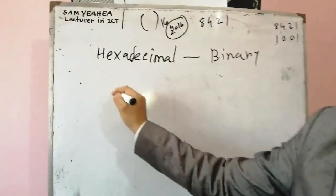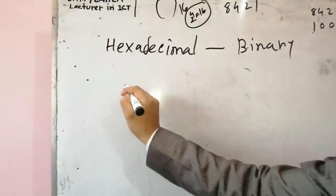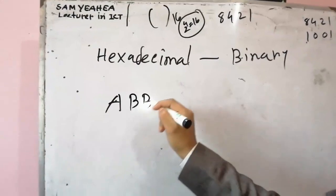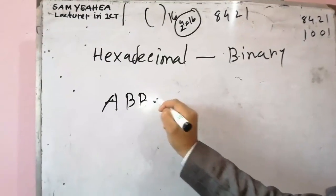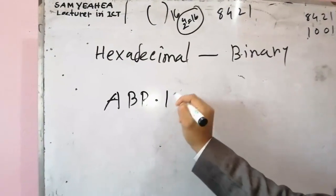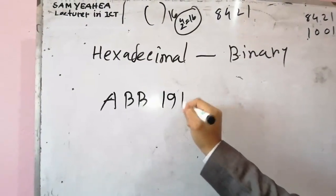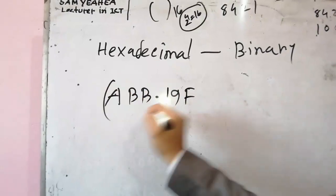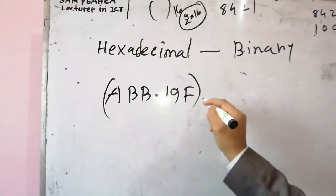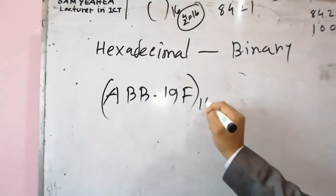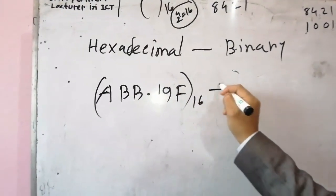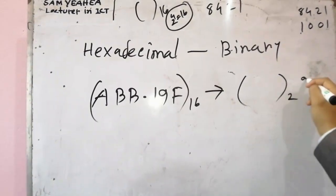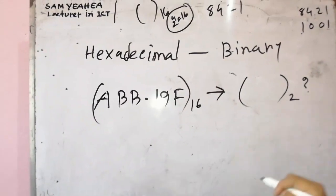We will give you A, B, B. We can write more than 1000. We will give you 16, and we will have a binary. This is the question.